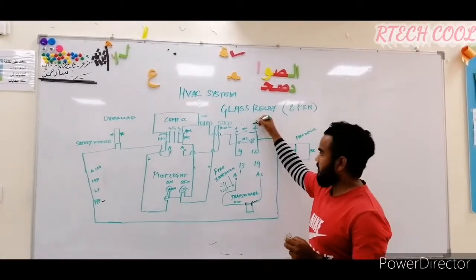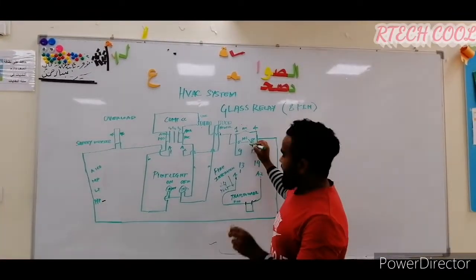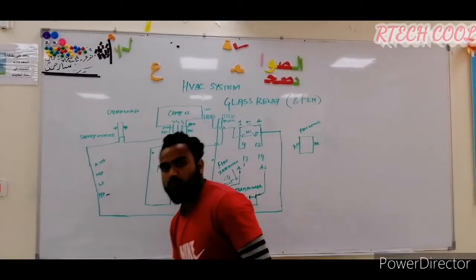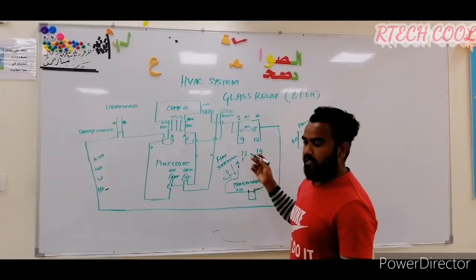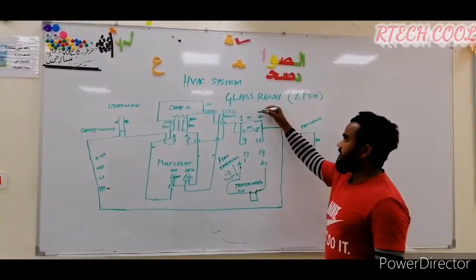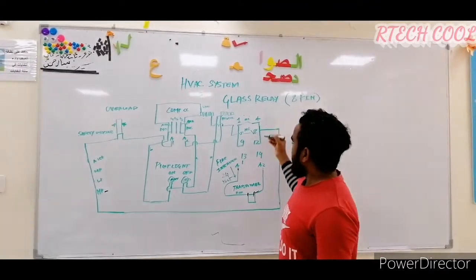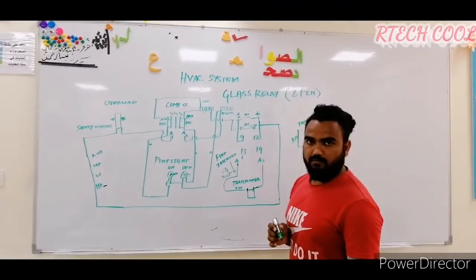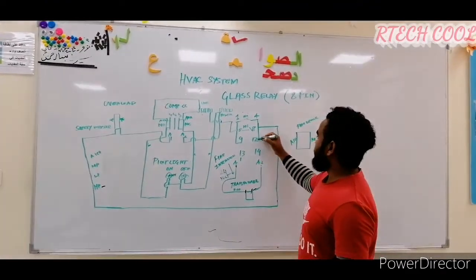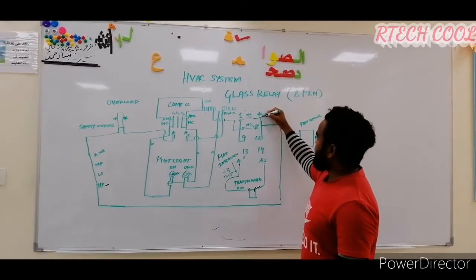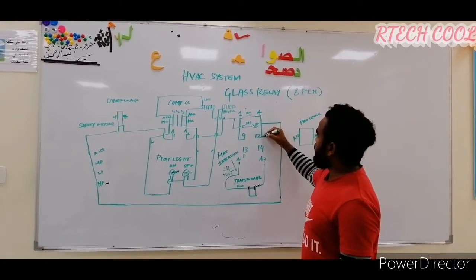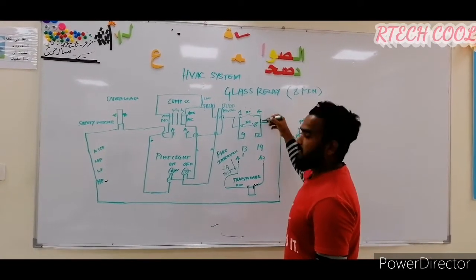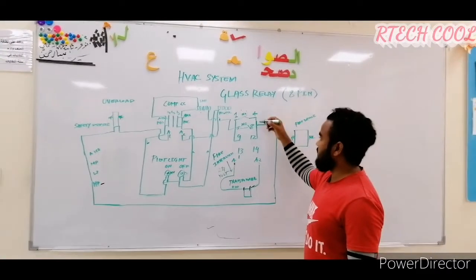Points 1 and 4 are always NC — Normally Closed. Points 5 and 8 are NO — Normally Open. Points 9 and 12 are the common line. Points 1, 4, 9, and 12 are all connected to each other as the common.